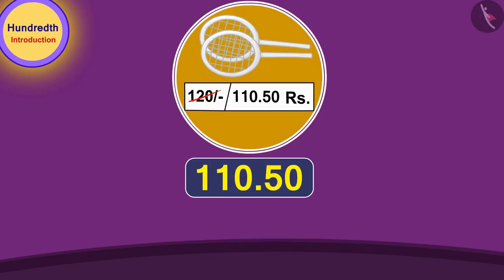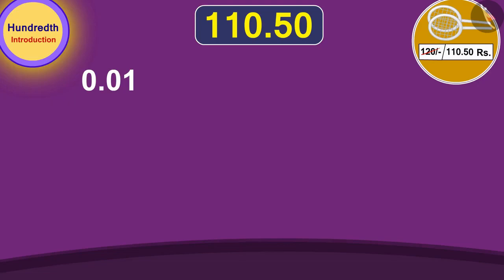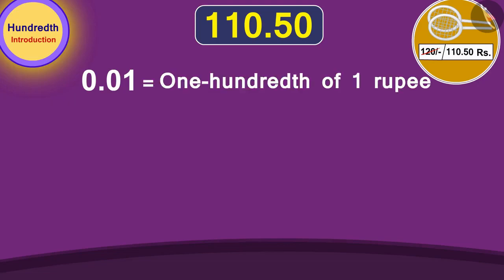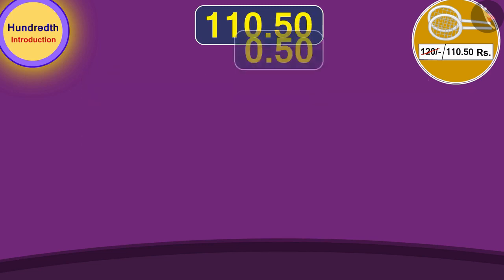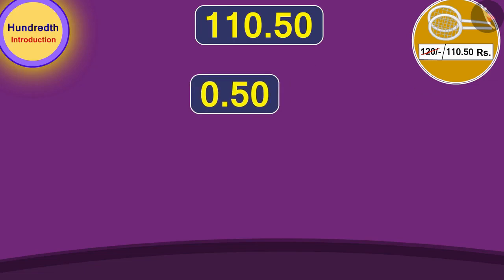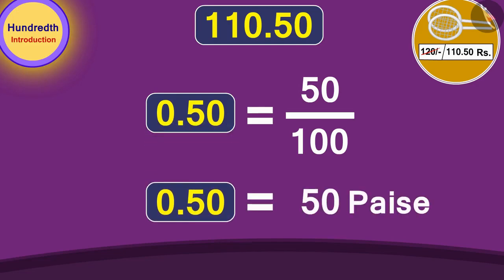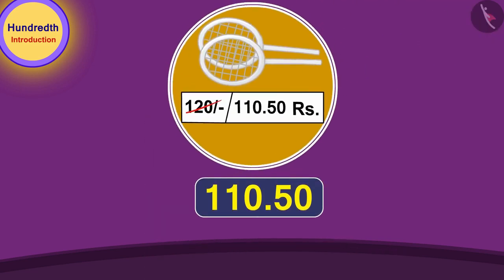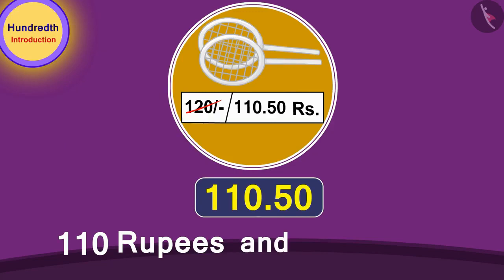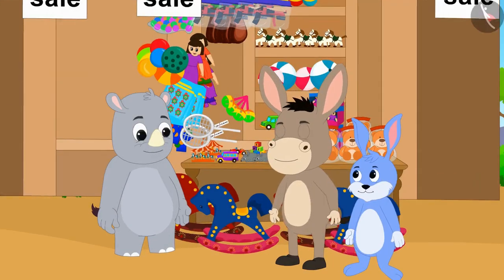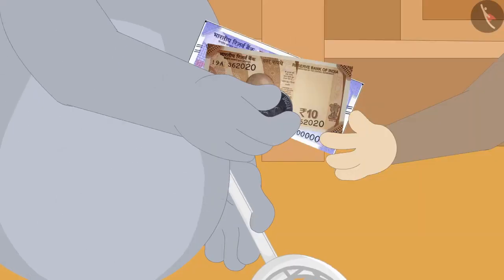We can write one hundredth part of any number using a decimal point as 0.01. The price of the badminton racket is 110.50 rupees. 0.01 rupee, or one hundredth of a rupee, is equal to one paise. Therefore, 0.50 is 50 hundredth parts of one rupee, or 50 paise. In this way, the price of the badminton racket is 110 rupees and 50 paise, Bunny explained to Bhola.